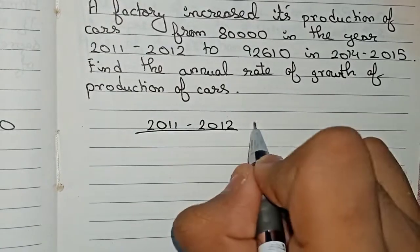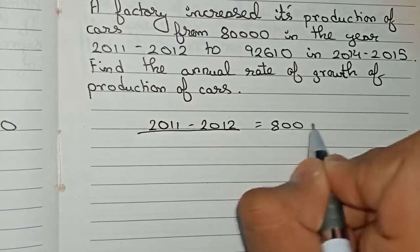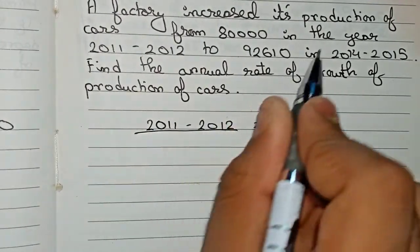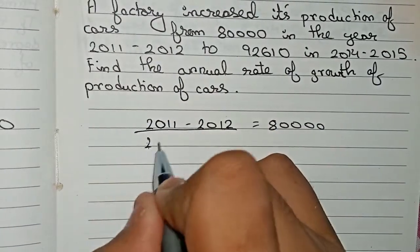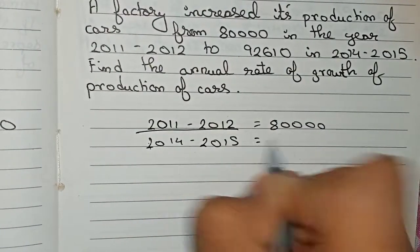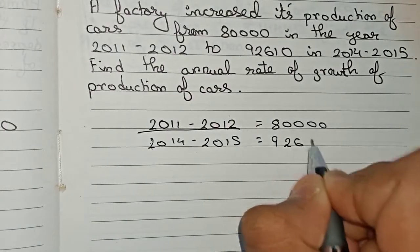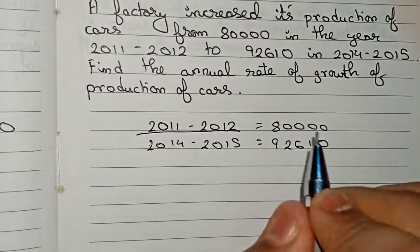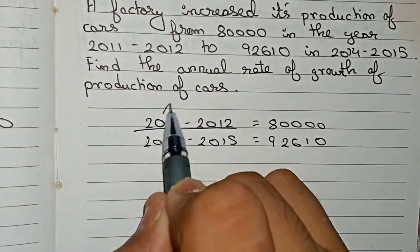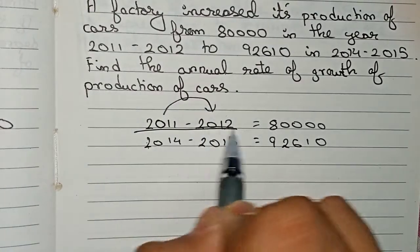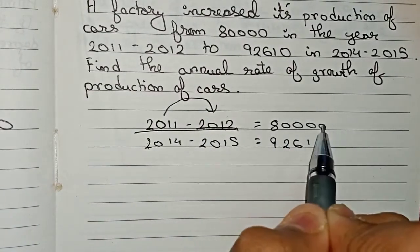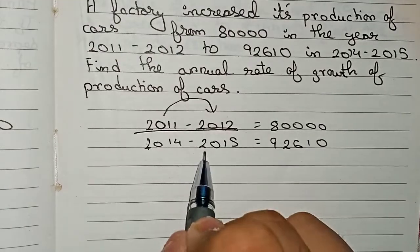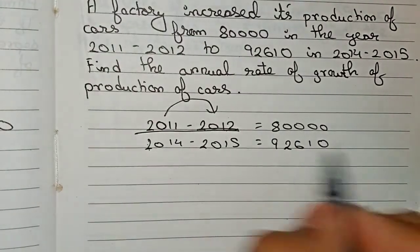And in 2014 to 2015 it becomes 92,610. So here you can see that from 2011 to 2012, till 2012 the production was 80,000, and till 2015 the production is increased to 92,610.